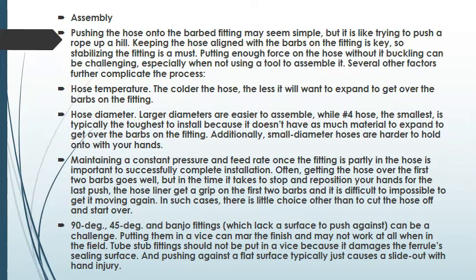Hose temperature: the colder the hose, the less it will want to expand to get over the barbs on the fitting. Hose diameter: larger diameters are easier to assemble, while number 4 hose — the smallest — is typically the most difficult to install because it doesn't have as much material to expand to get over the barbs on the fitting. Additionally, small diameter hoses are harder to hold onto with your hands.